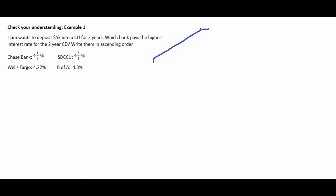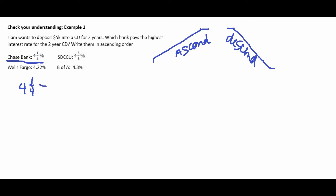Example one: Liam wants to deposit $5,000 into a CD for two years. Which bank pays the highest interest rate? Put them in ascending order. We have Chase Bank at 4¼%, Wells Fargo at 4.22%, SDCCU at 4⅜%, and Bank of America at 4.3%. First, convert the fractions: 4¼ = 4.25%, and 4⅜ = 4.375%.